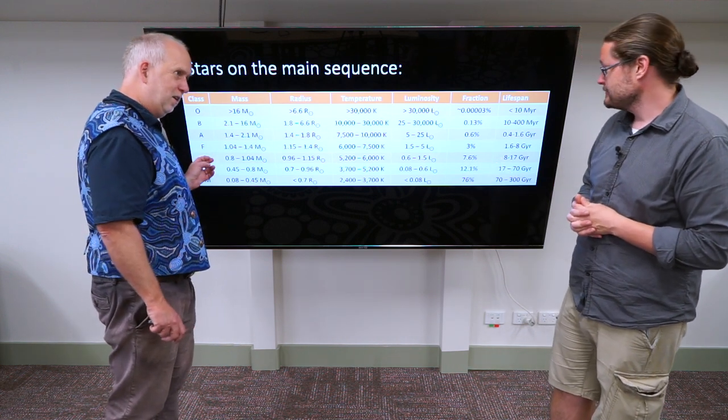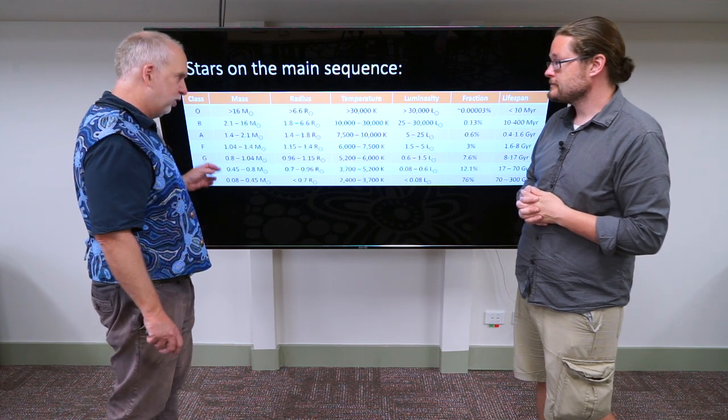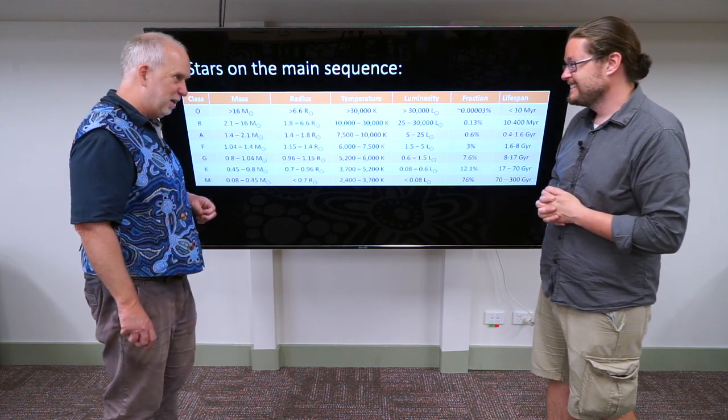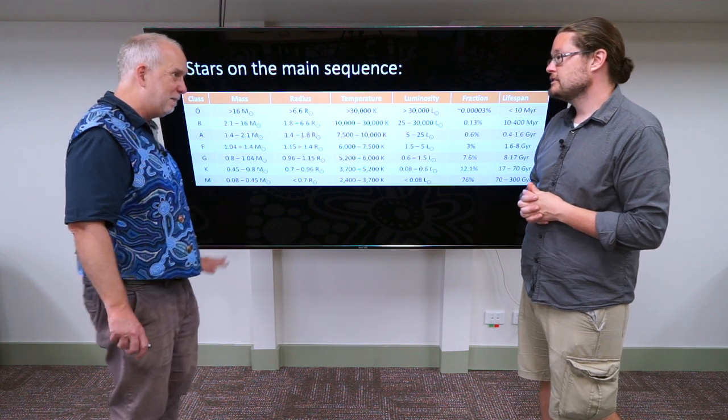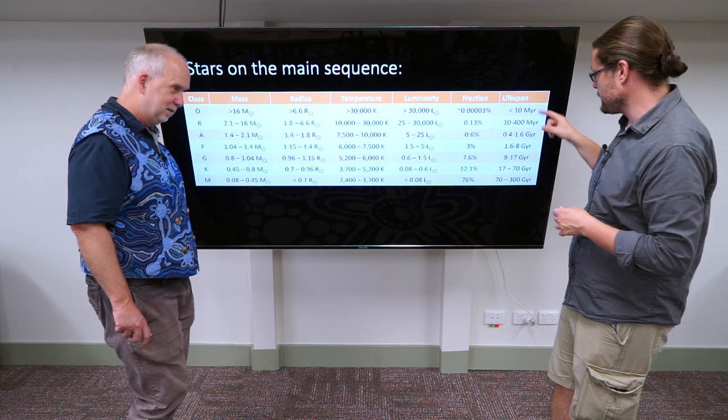So look at our Sun. Our Sun's often called a yellow dwarf star, the G-type star, but in fact it's in the top ten percent of all stars in terms of mass. Most stars are cooler and less massive than the Sun.